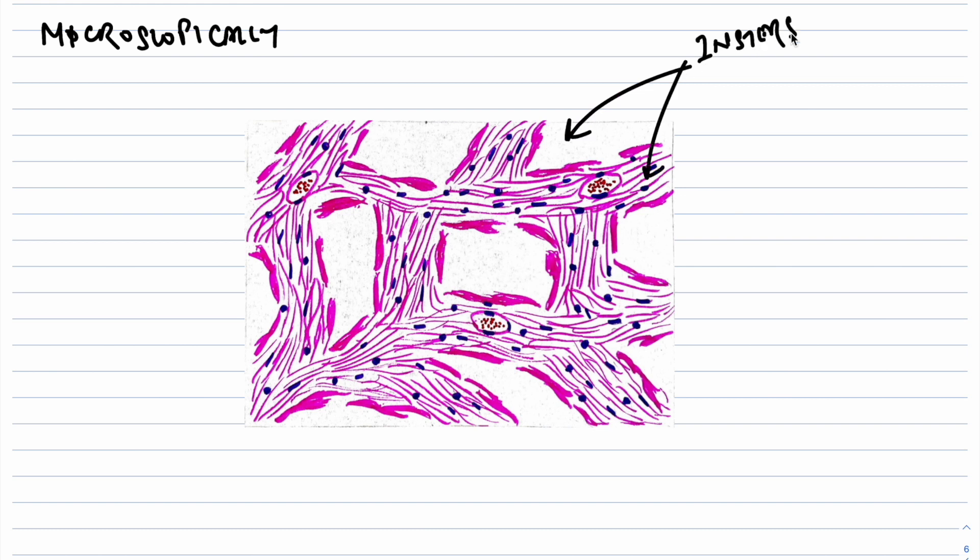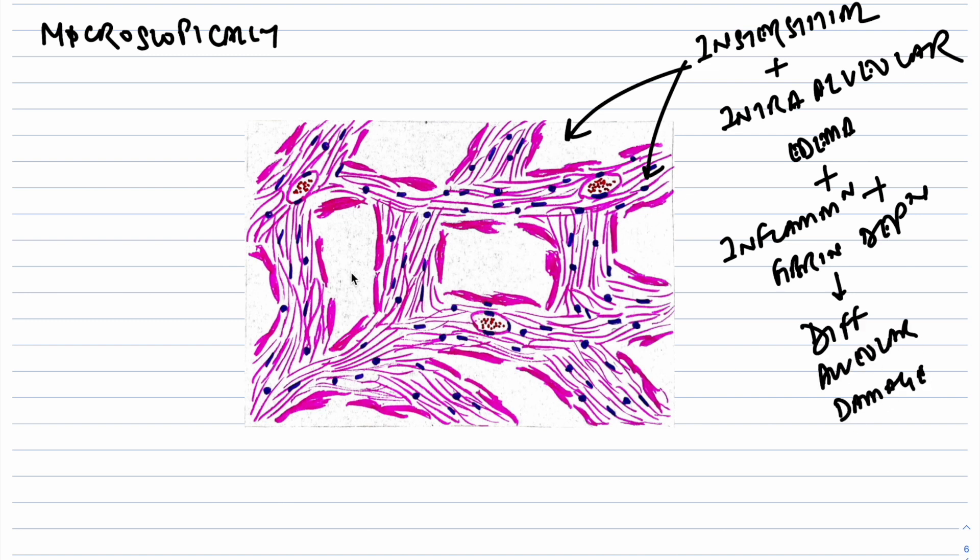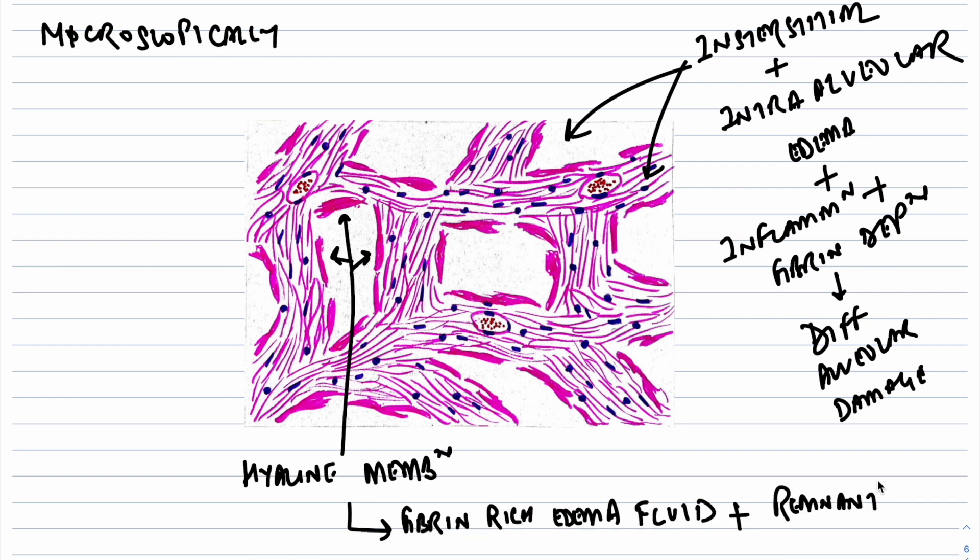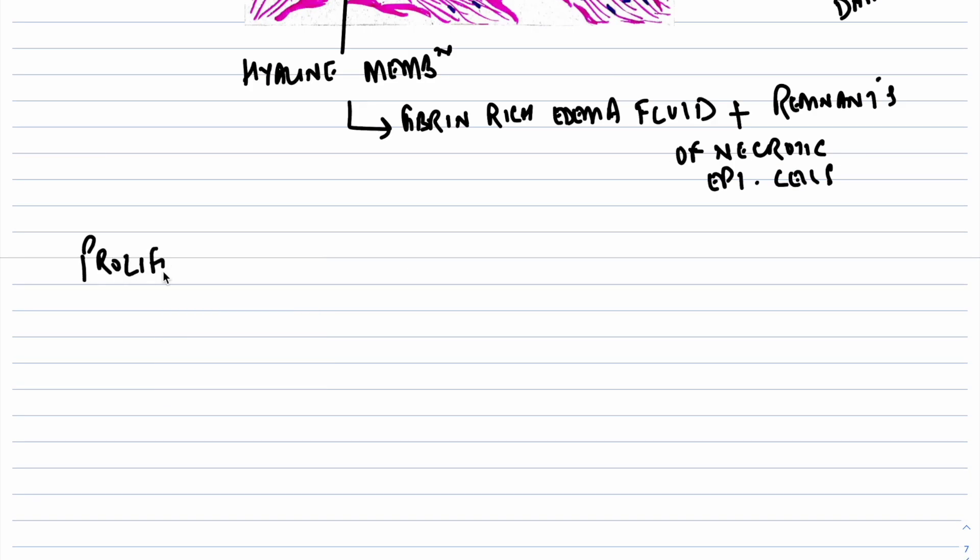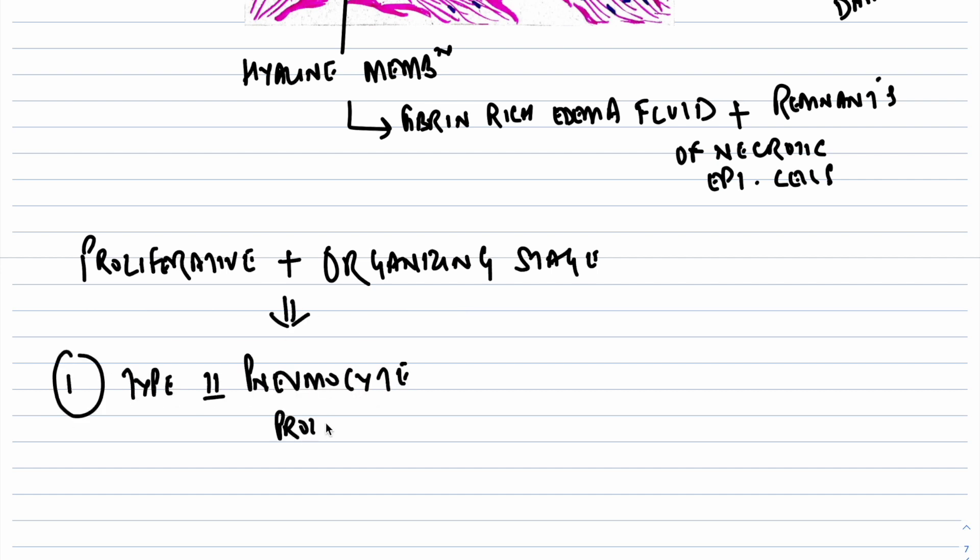In the morphology, in the acute exudative stage, the lungs are heavy, firm, red, and boggy. Microscopically, there is interstitial and intra-alveolar edema, inflammation, fibrin deposition, ultimately leading to diffuse alveolar damage. The alveolar walls become lined by waxy hyaline membranes composed of fibrin-rich edema fluid mixed with remnants of necrotic epithelial cells.